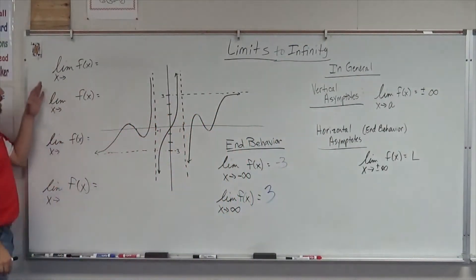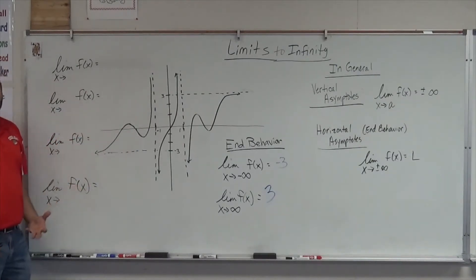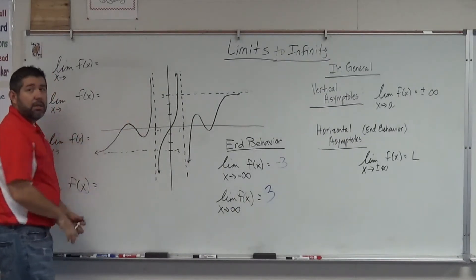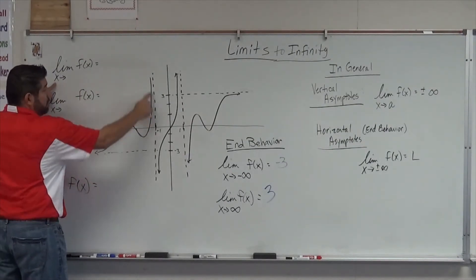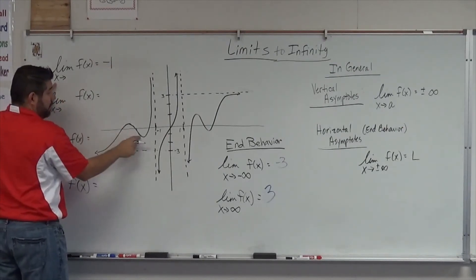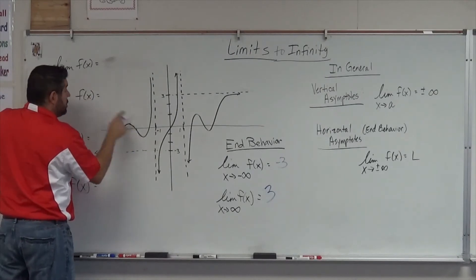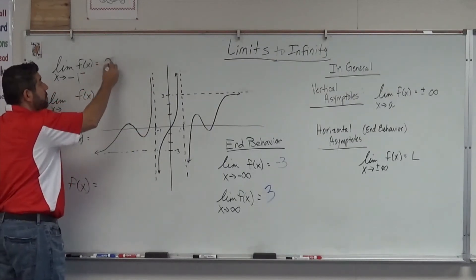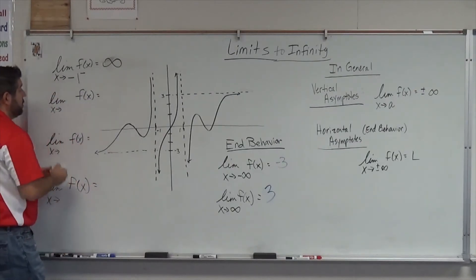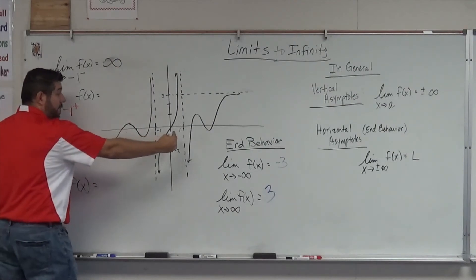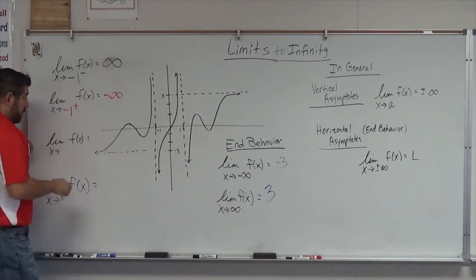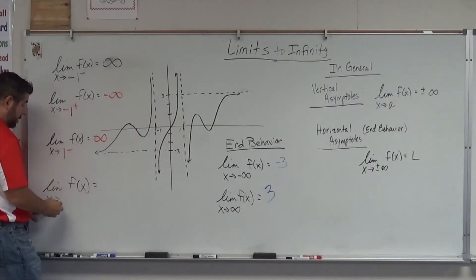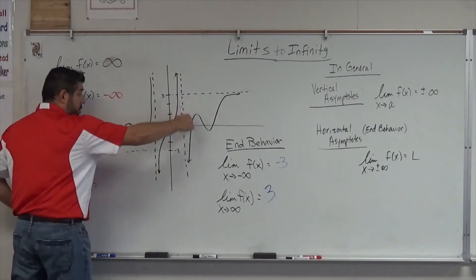Now let's look at the vertical asymptotes — I left them blank so you can figure out how these limits work. The first vertical asymptote is at x = negative 1. As x approaches negative 1 from the left, the function goes up to positive infinity. As x approaches negative 1 from the right, it goes down to negative infinity. Then the limit as x approaches positive 1 from the left goes to positive infinity, and the limit as x approaches positive 1 from the right goes to negative infinity.